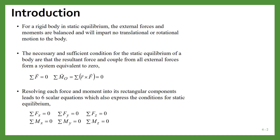As in the case of particles, when we studied the equilibrium of particles, there is no unbalanced force and all the resultant forces should be zero. Similarly, for a rigid body to be in equilibrium the necessary and sufficient condition is that all the forces and moments should be zero — the resultant of all the forces and the resultant of all the moments should be zero. That means summation of all the external forces should be zero, and similarly summation of all the moments at a particular point should be zero.